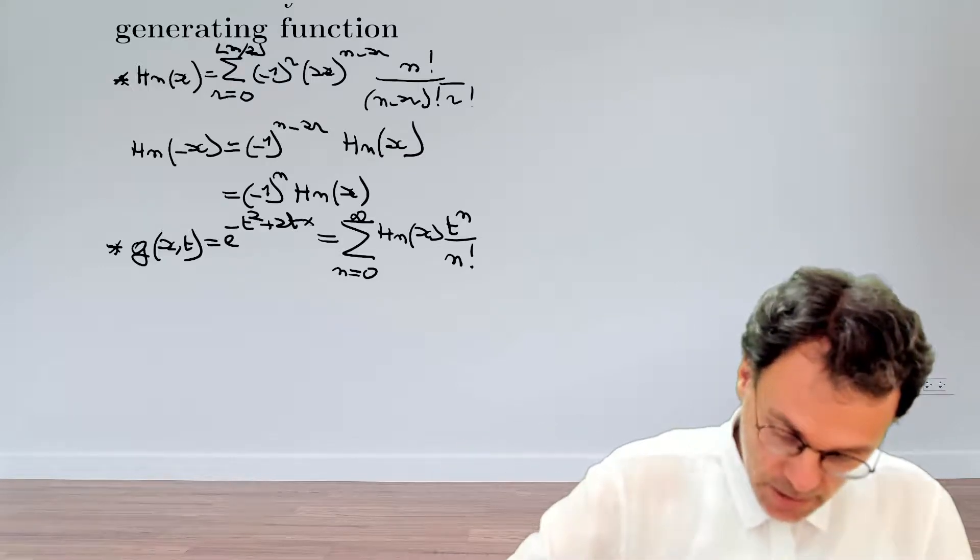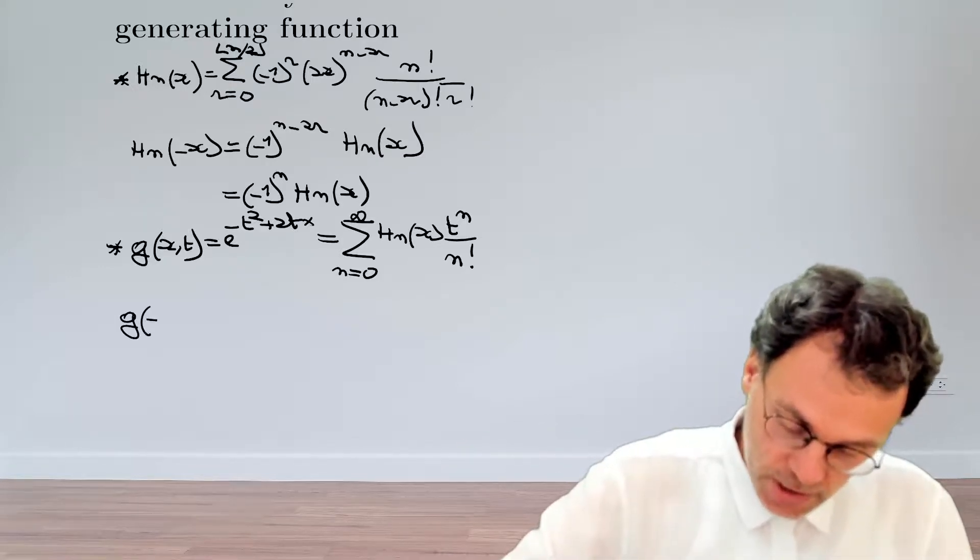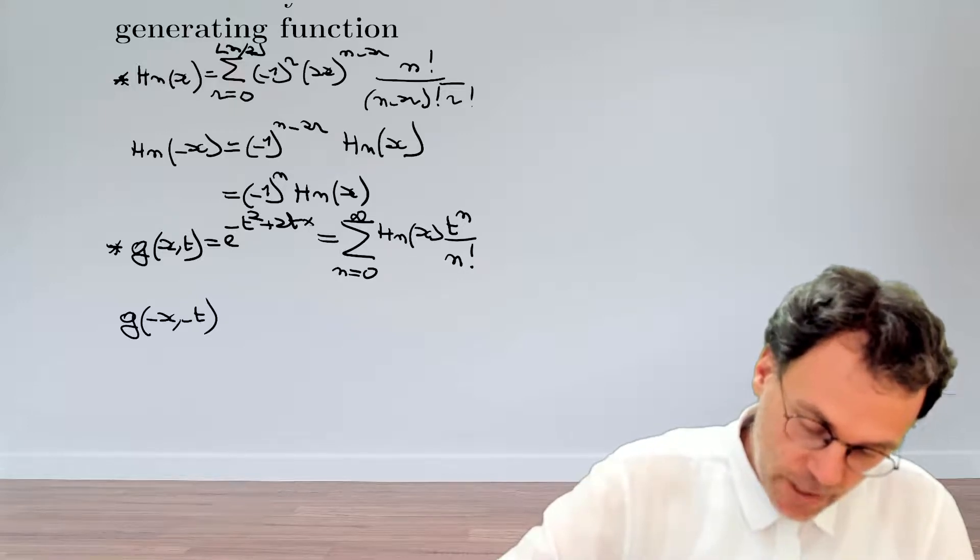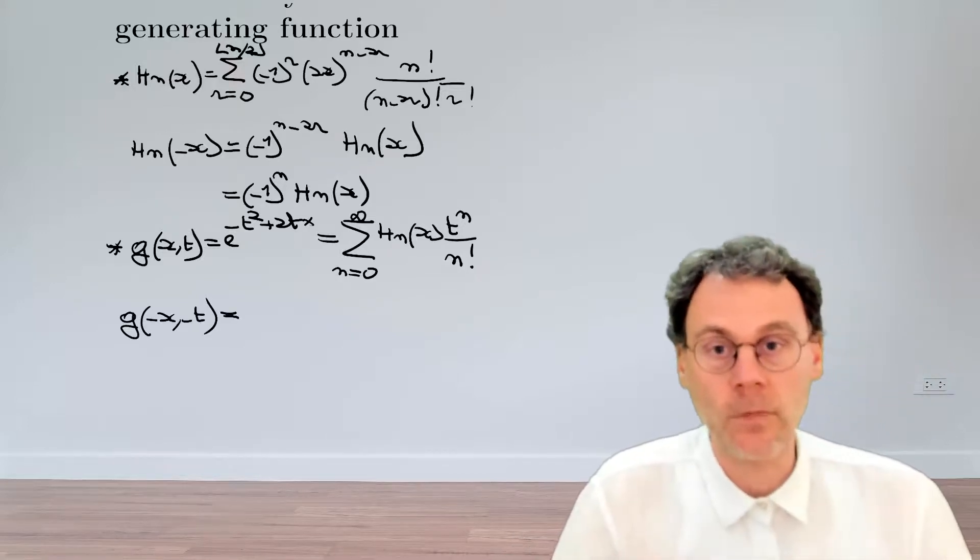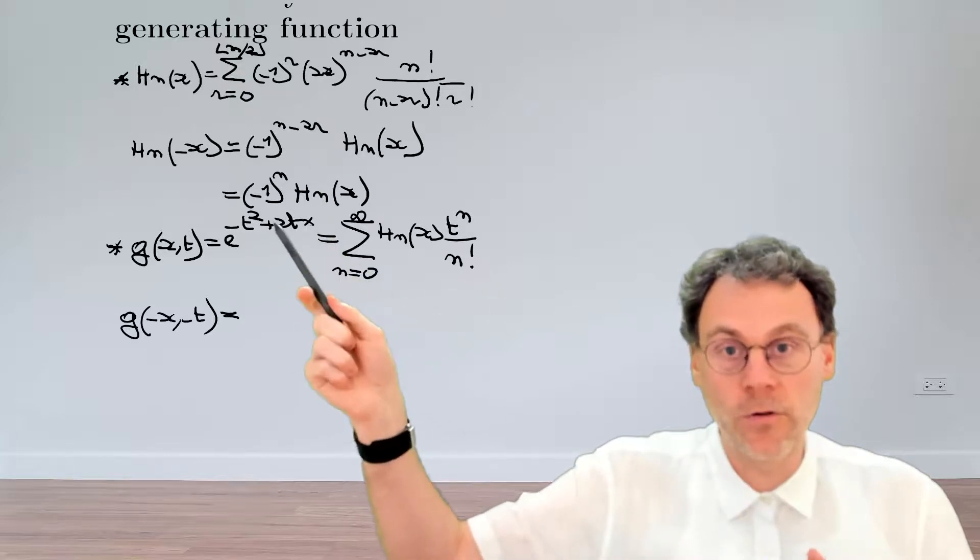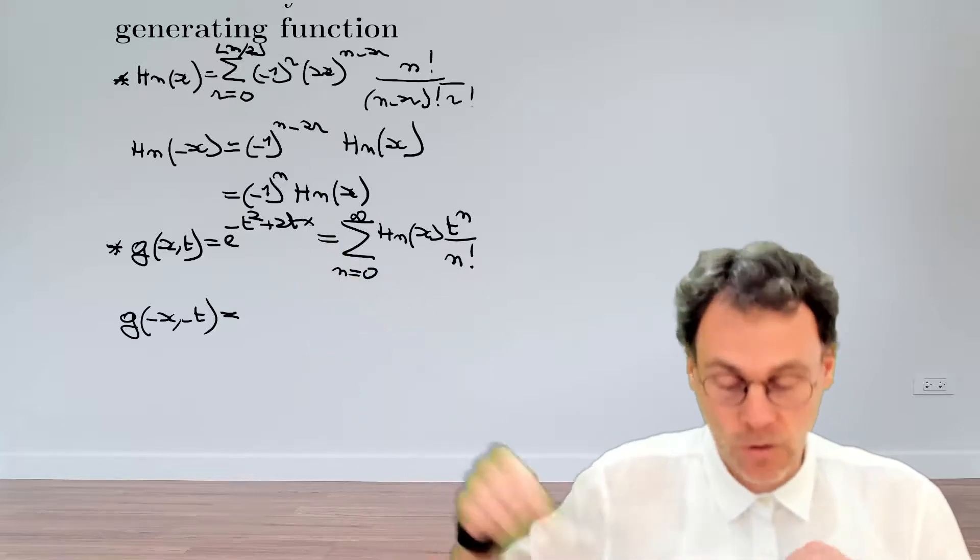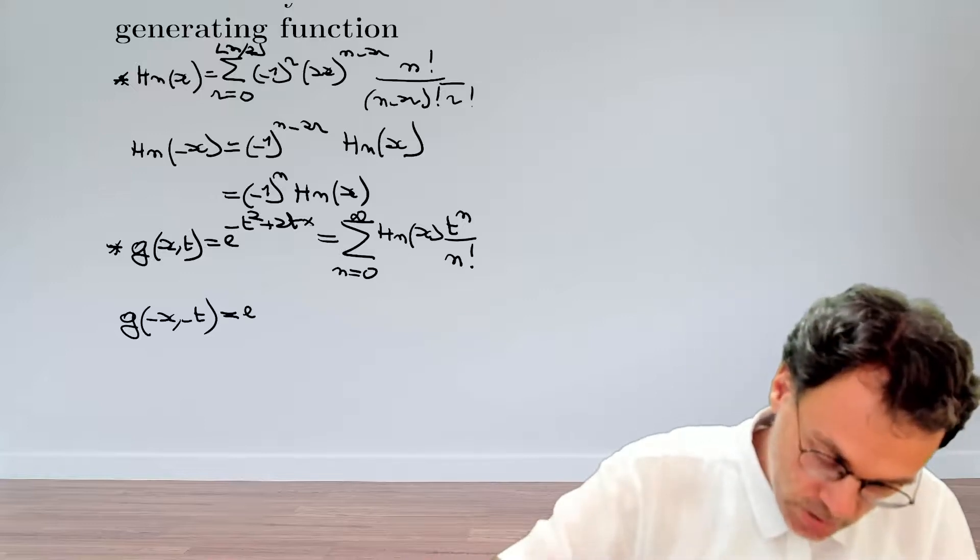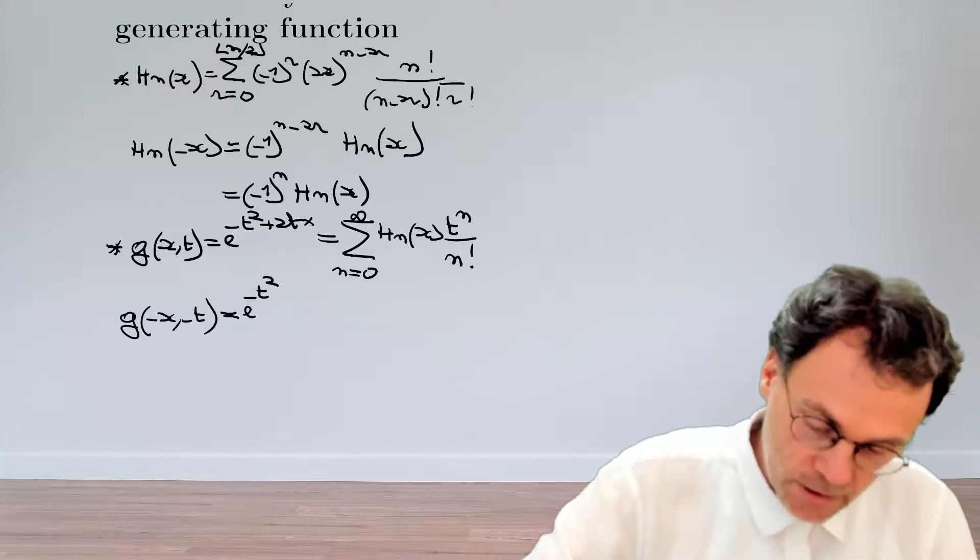And the hint I gave you is to exchange x by minus x and t by minus t. Now looking at that generating function, you will notice that if you replace t by minus t because of the square, nothing changes. So it's still exponential minus t squared.